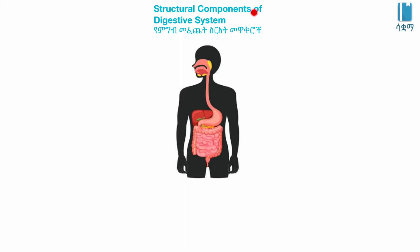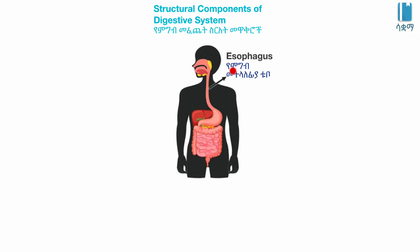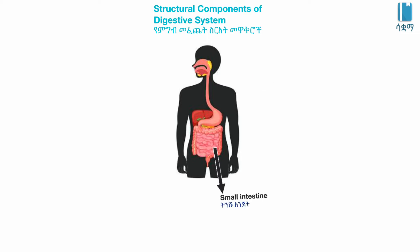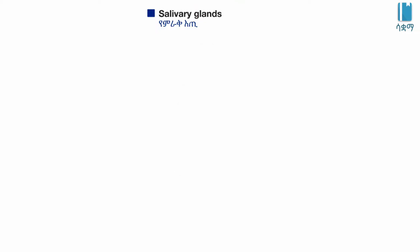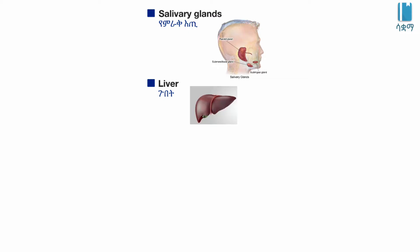The structural components of the digestive system include the mouth, the stomach, the small intestine, the large intestine, the salivary glands, the liver, and the pancreas.